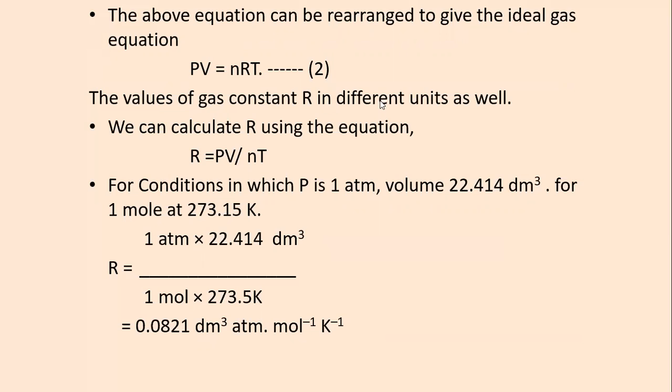The above equation can be rearranged to give the ideal gas equation: PV = nRT. The values of gas constant R in different units can be calculated. For conditions in which P is 1 atm, volume 22.414 dm³ for 1 mole at 273.15 K, we can calculate R.